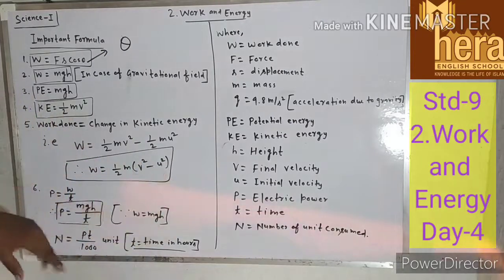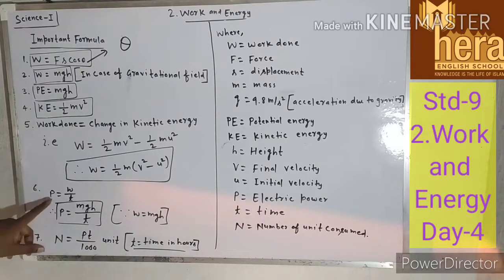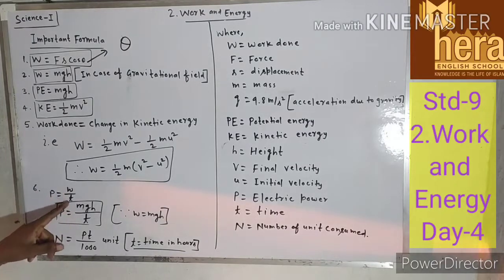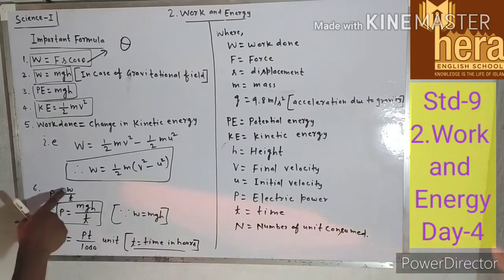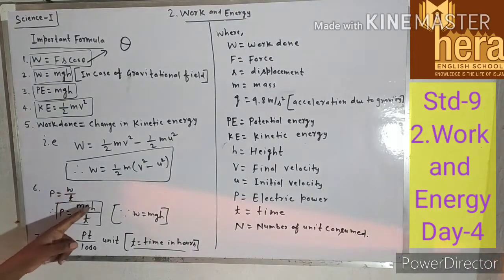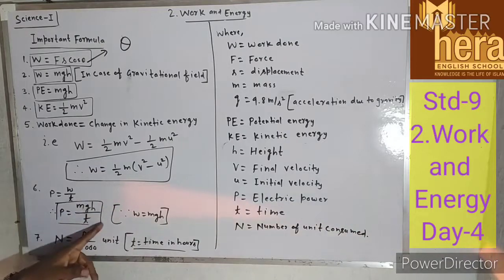P = W/T, where P is the power, W is the work done, and T is the time. If you substitute W = MGH, then P = MGH/T. This formula is also important and will be used in the numericals.